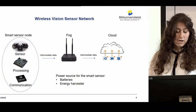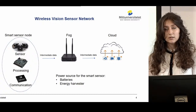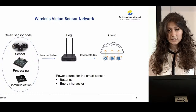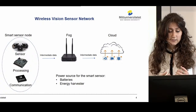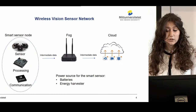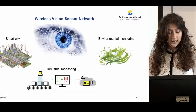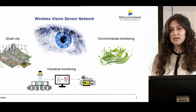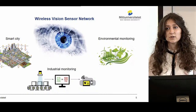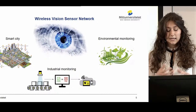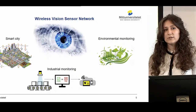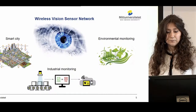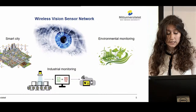One of the main constraints we consider throughout our analysis is that we design the smart sensor node as a battery-operated or energy harvester-operated device. The reason for this is that we want the smart sensor node to be easily deployed in a wide range of scenarios — for example, smart city, industrial monitoring, or environmental monitoring — where the presence of a power plug would be quite restricting. By designing this as a battery-operated device, we enable a wider range of applications.